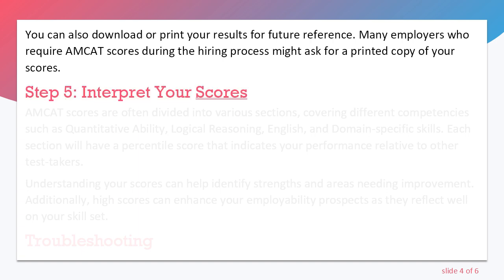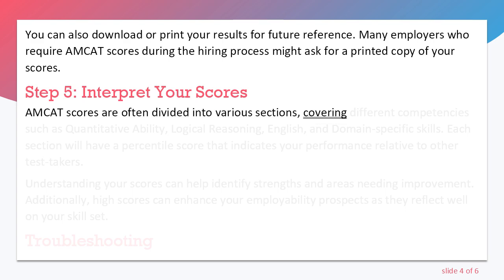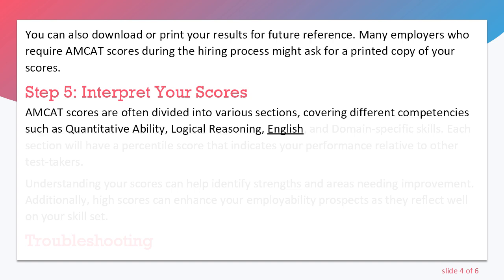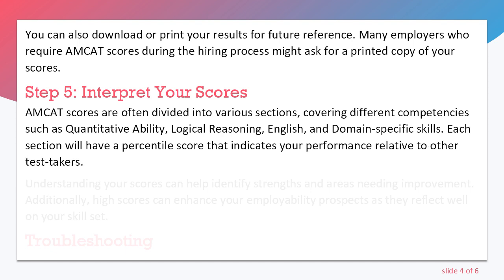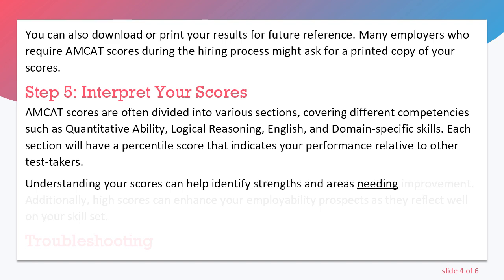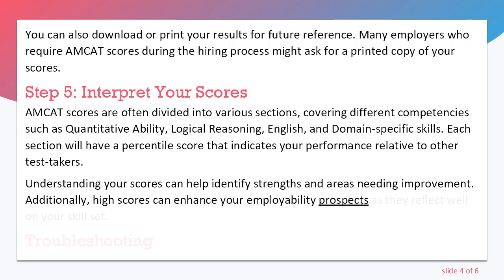Step 5: Interpret your scores. AMCUT scores are often divided into various sections covering different competencies such as quantitative ability, logical reasoning, English, and domain-specific skills. Each section will have a percentile score that indicates your performance relative to other test-takers. Understanding your scores can help identify strengths and areas needing improvement. Additionally, high scores can enhance your employability prospects as they reflect well on your skill set.